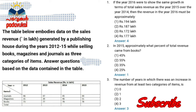The table below shows data on the sales revenue in lakhs generated by a publishing house during the years 2012 to 2015, while selling books, magazines, and journals as three categories of items. The questions are based on the data contained in this table.